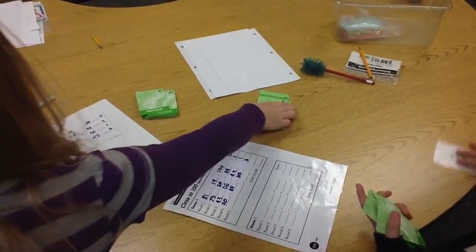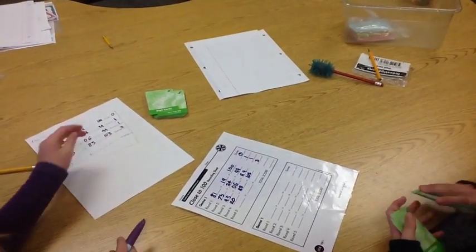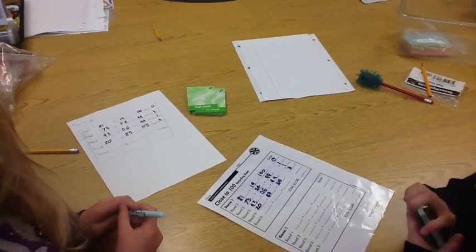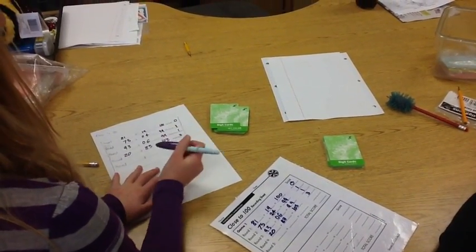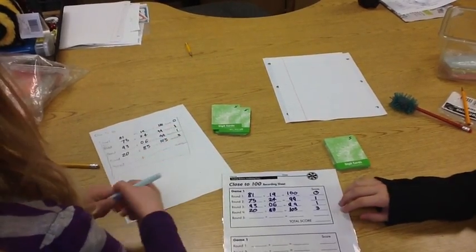And when you're done, we would have one more round, but so far our total score is, you add up all the scores and it would be five.